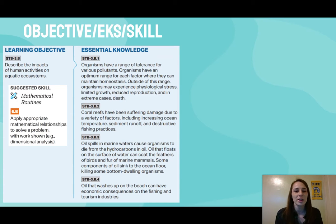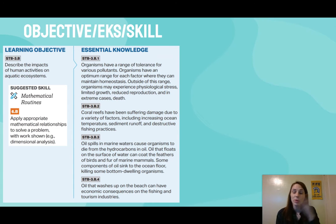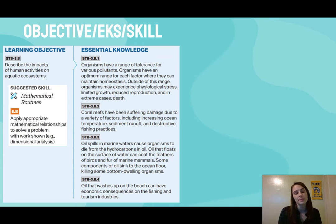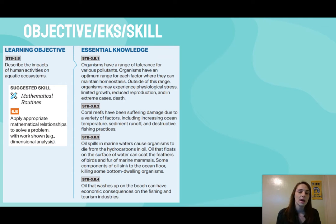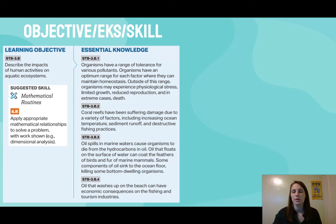The essential knowledge you're going to be gaining today covers how organisms have a range of tolerance — we've talked about this in past units — but we'll talk about it specifically with pollutants today. We're also going to focus on coral reefs and how humans are negatively impacting them, and then look at oil spills and how oil can cause consequences for aquatic ecosystems.